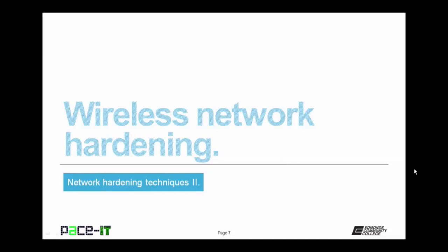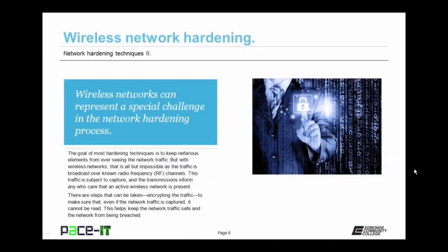Let's move on to wireless network hardening. Wireless networks present a special challenge in the hardening process. The goal of most hardening techniques is to keep nefarious elements from seeing network traffic — but with wireless networks, traffic is broadcast over known radio frequency channels and is subject to capture. There are steps that can be taken, such as encrypting the traffic, to make sure that even if network traffic is captured, it cannot be read, helping to keep the network safe from being breached.